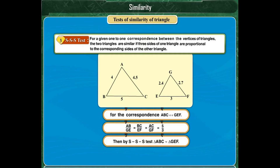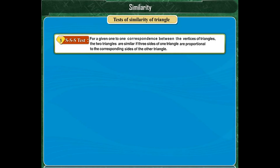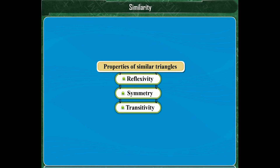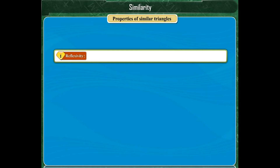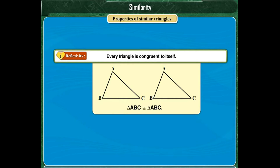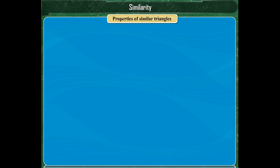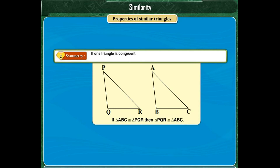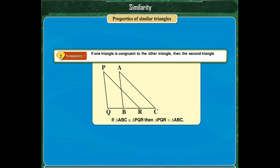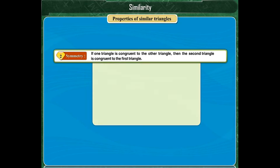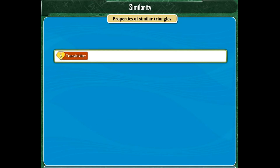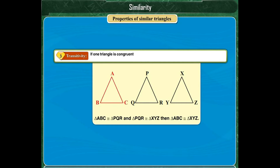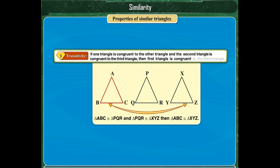Having revised the tests for similarity of triangles, we will learn the properties of similar triangles. In the previous class, we had studied the properties of congruency of triangles. The first property is reflexivity — every triangle is congruent to itself. The second is symmetry — if one triangle is congruent to the other, then the second is congruent to the first. The third property is transitivity — if one triangle is congruent to a second, and the second is congruent to a third, then the first is congruent to the third.